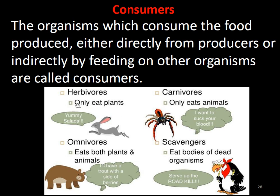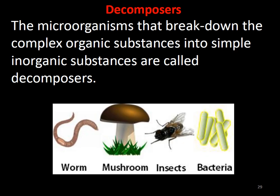Primary consumers are herbivores who directly eat plants. Carnivores are secondary consumers who feed on these herbivores. Omnivores eat both plants and animals. Scavengers eat bodies of dead and decaying organisms. Organisms which consume food produced directly or indirectly from other organisms are called consumers.